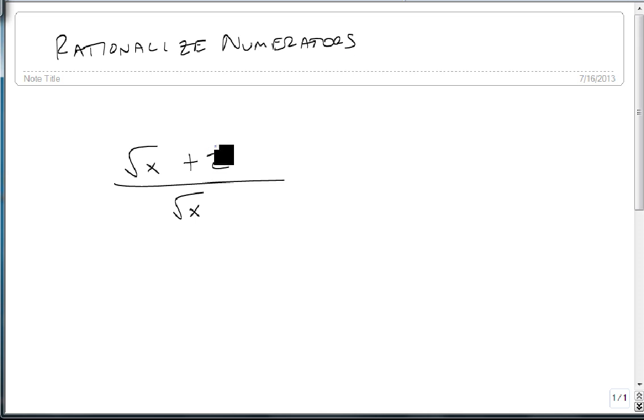The way I do that is I look at my numerator and I calculate a conjugate pair, which is the opposite of the difference of squares, remember, because that allows us to get rid of the square root of x.